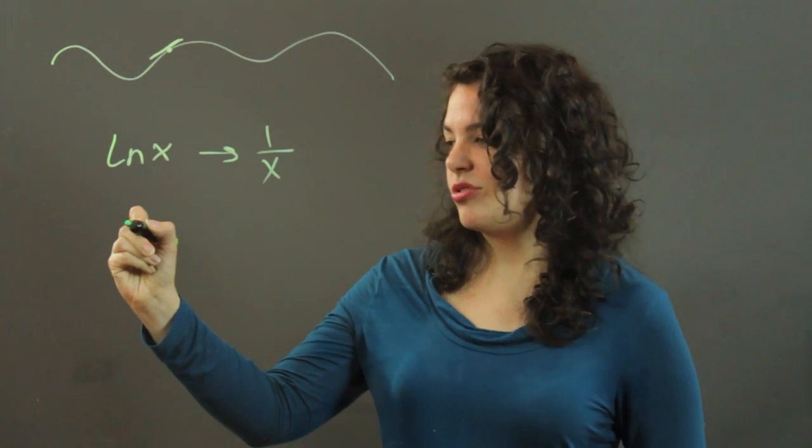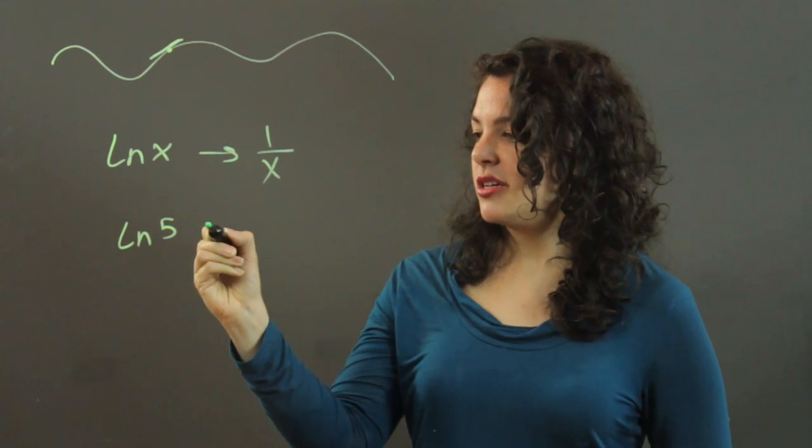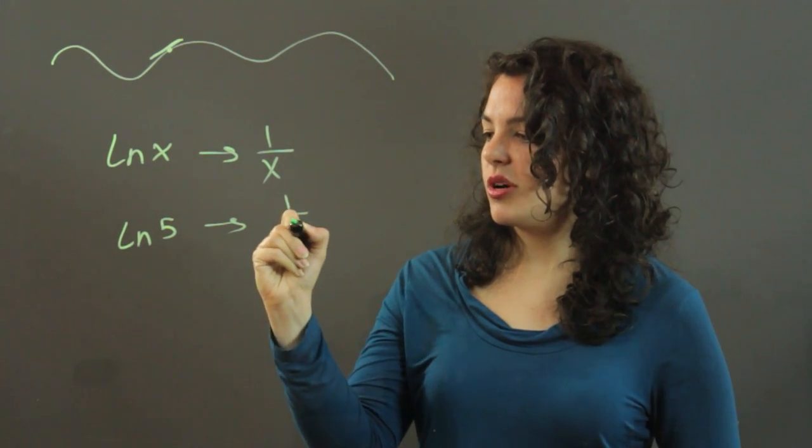So let's say we had the natural log of 5. The slope of the tangent line is simply 1 over 5.